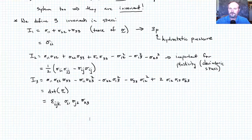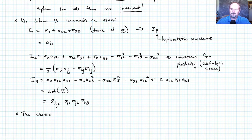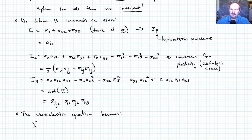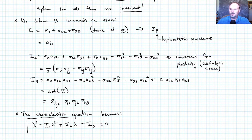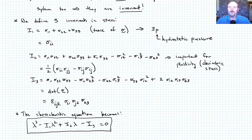Using those invariants, the characteristic equation can now be written as: lambda cubed minus I1 lambda squared plus I2 lambda minus I3 equals zero. That is what our characteristic equation looks like in terms of the three stress invariants I1, I2, and I3. If we want to solve for the three principal stresses lambda, this is the equation we must solve.